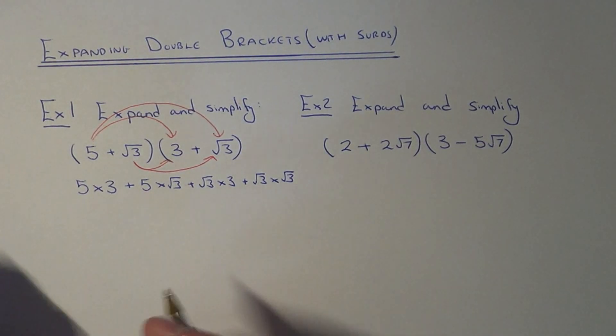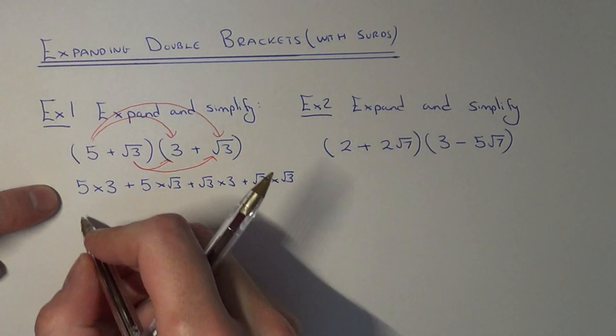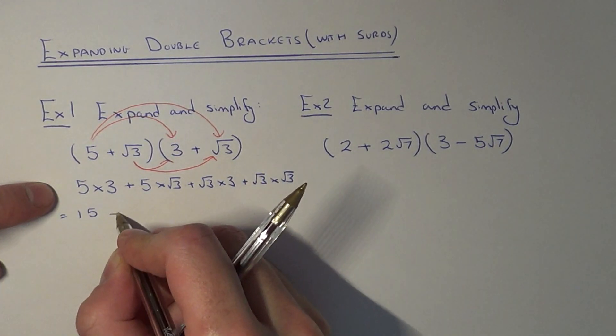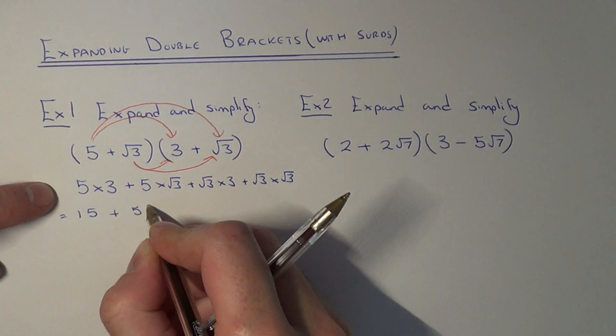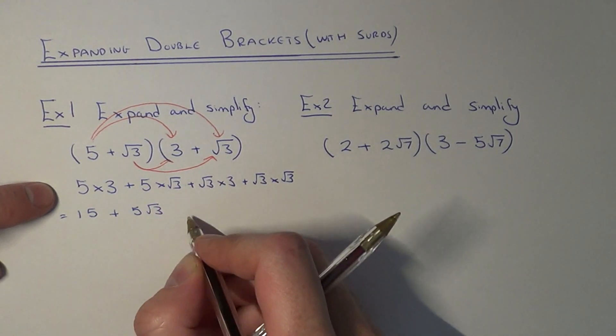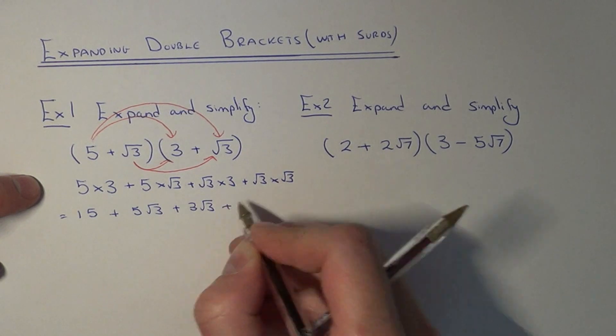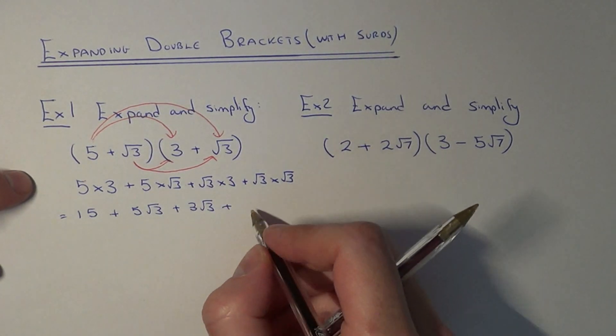So we just need to simplify this now. 5 times 3 is 15. 5 times root 3 is 5 root 3. Root 3 times 3 is 3 root 3. And root 3 times root 3 will just give you 3.